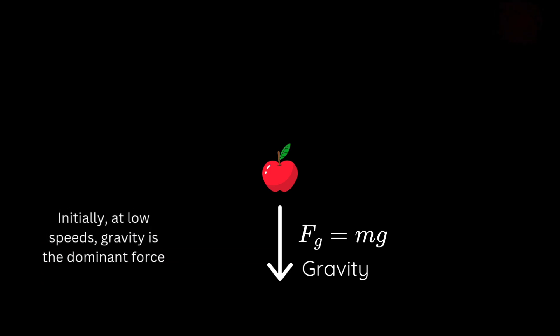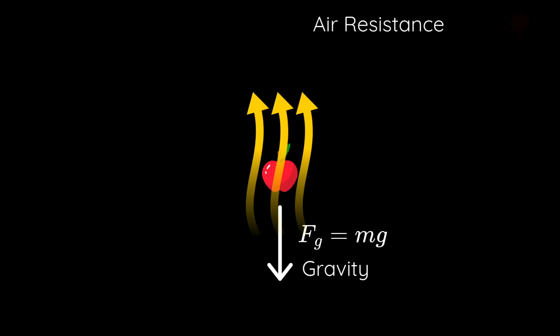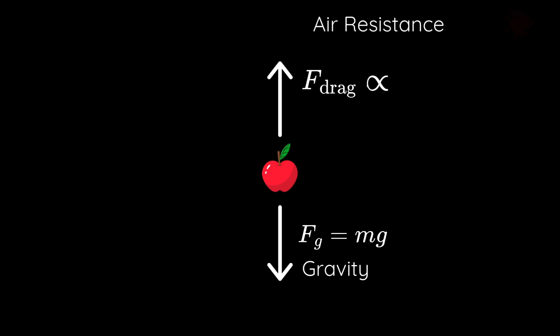Initially, when the object starts falling, it is only under the influence of gravity, accelerating downwards. But as its speed increases, air resistance begins to build up. This drag force, pointing against the direction of motion, depends on a variety of factors. Higher the speed, higher the air resistance. Experiments and studies have shown that it goes with the square of the speed—a phenomenon called quadratic drag.